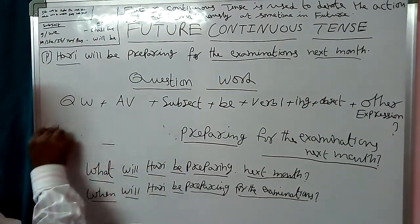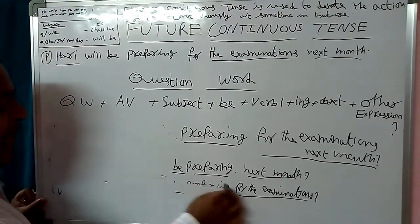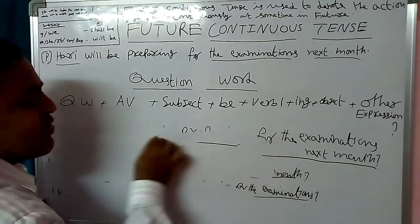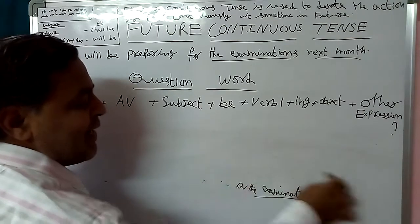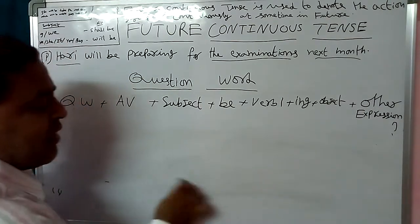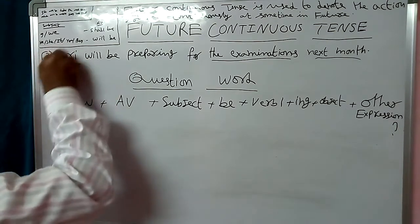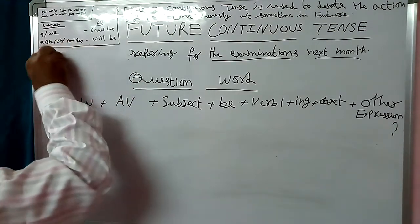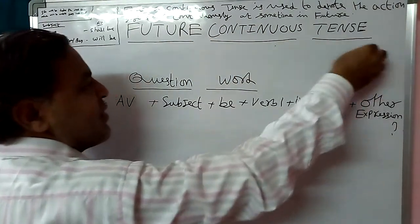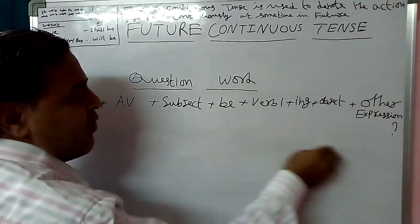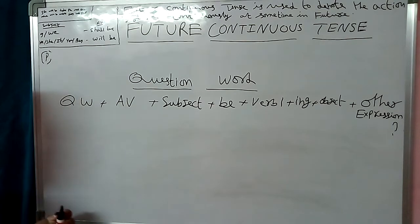The Question Word rule is: Question Word + Auxiliary + Subject + Be + Verb 1 + -ing + Object + and Other Expression + Question Mark.